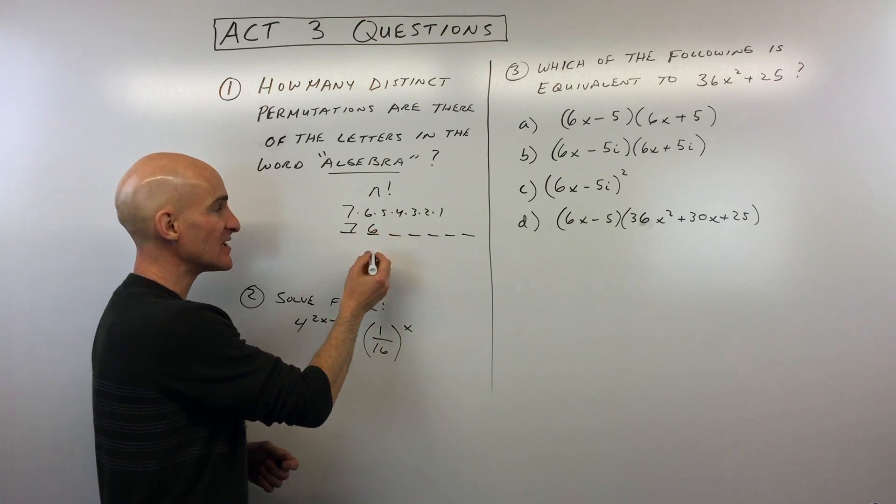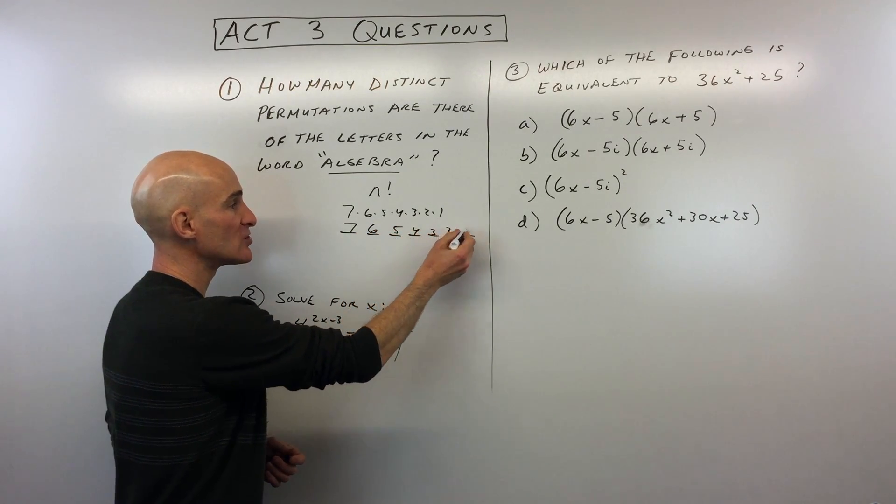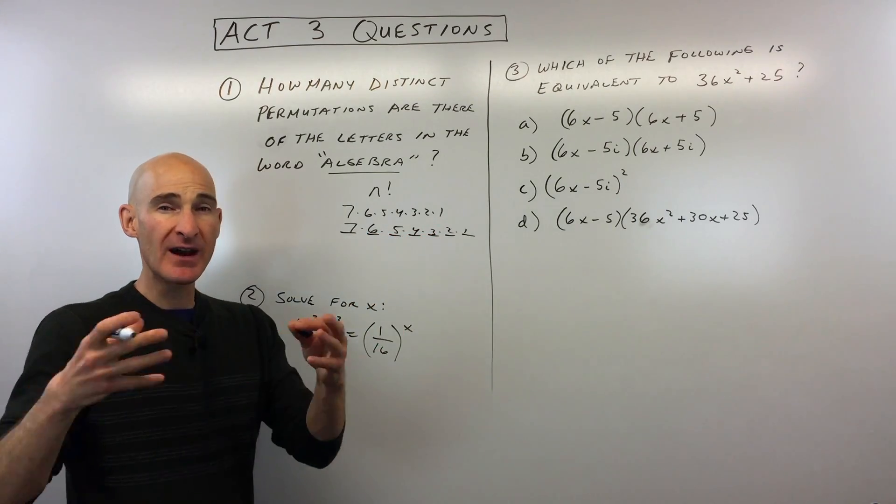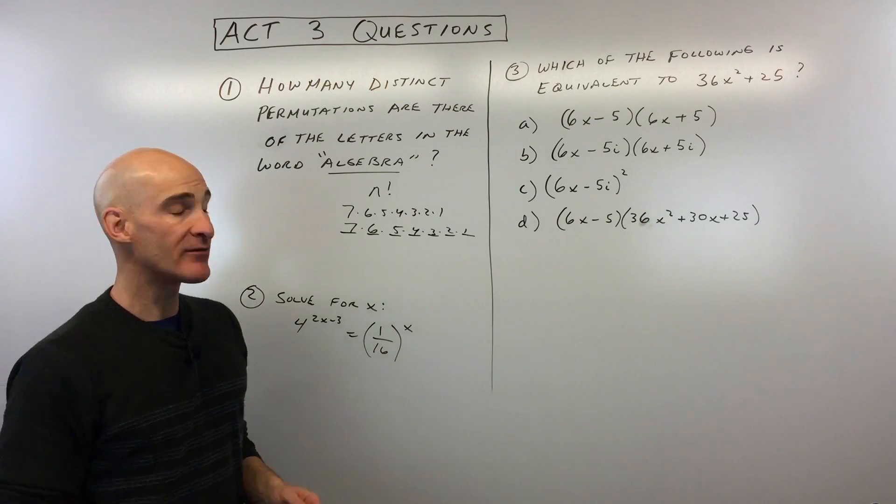But then once you pick that letter out, that first one, how many are there going to be for the second grab? Well, there's going to be six, and then after that there's going to be five, four, three, two, one. And so what we're doing is we're multiplying those together to find out the total number of ways that you could draw out these seven letters.